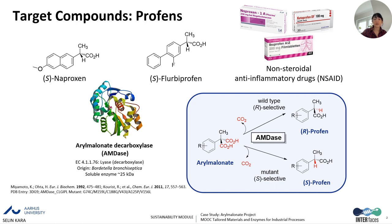The enzyme of interest is aryl malonate decarboxylase. The wild-type enzyme decarboxylates aryl malonate compounds to R-enantiomers. However, S-profens — the S-enantiomers — have the desired medical effect. This PhD thesis was a collaboration with Graz University of Technology, with the group of Robert Kraus, from whom we received the highly S-selective mutant.